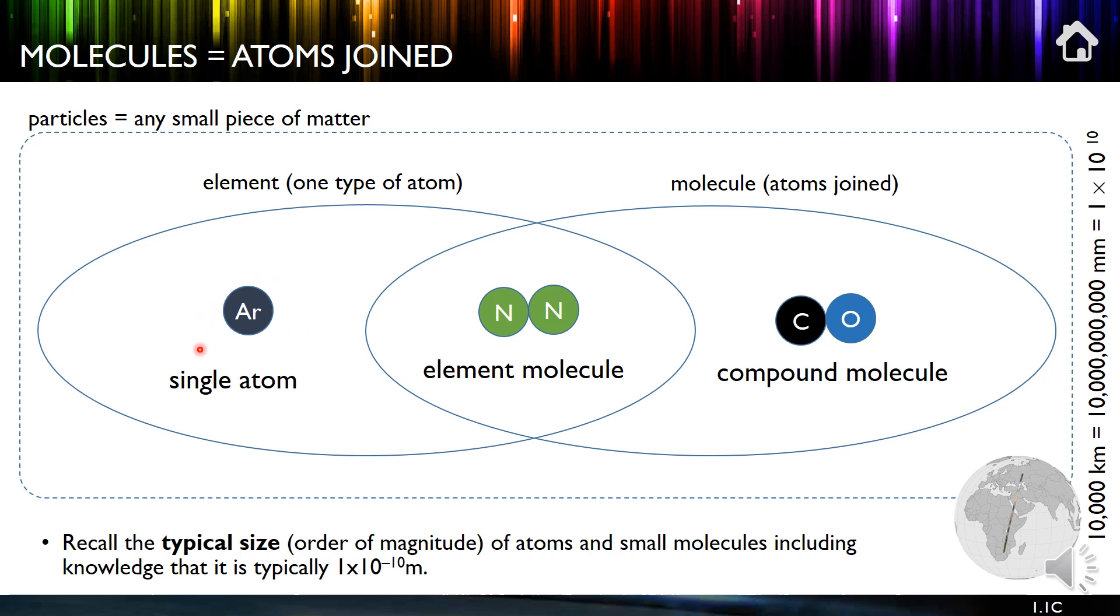They can either be single atoms. So argon doesn't join to anything else, not even itself. Here we have a molecule. So a molecule is atoms joined, but it's also an element. So nitrogen is N2. So one atom of nitrogen likes to join to another one. Over here, our example here is carbon monoxide. So two atoms joined, so it's still a molecule, but it's a compound molecule because they're different.